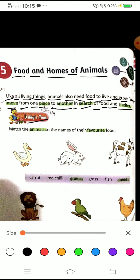Dobby's time. Match the animals to the names of their favorite food. Okay children. Carrot, red chili, grains, grass, fish and meat. So listen carefully children. Food means annha. Homes means ghur. And animals means prani.